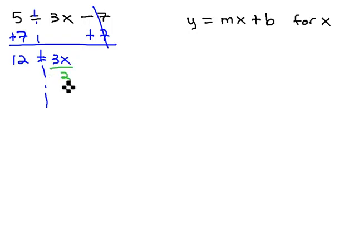And then finally, we would get rid of the 3 by dividing both sides by 3, giving us 4 equals x.